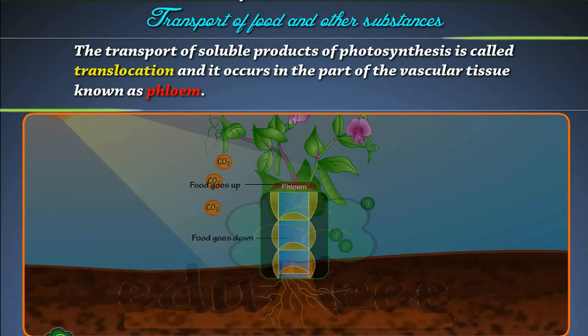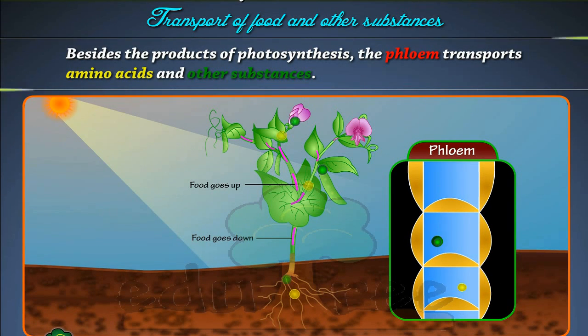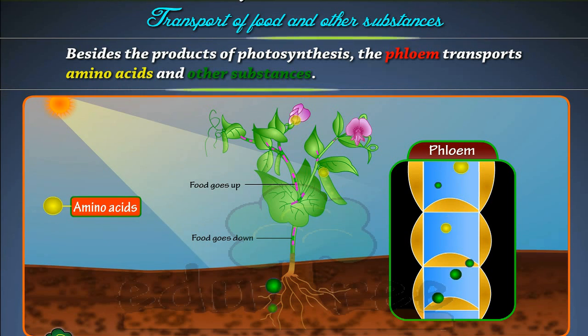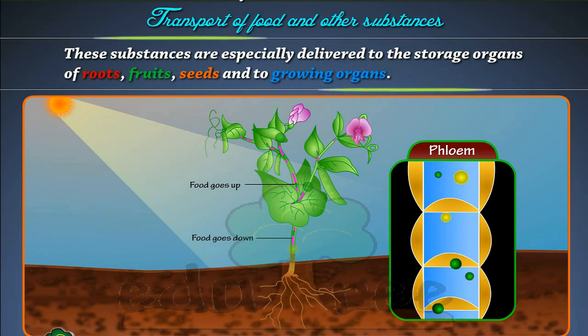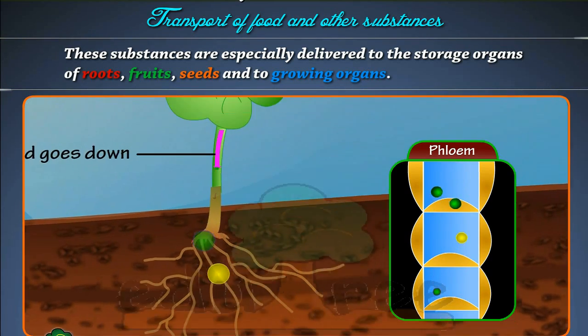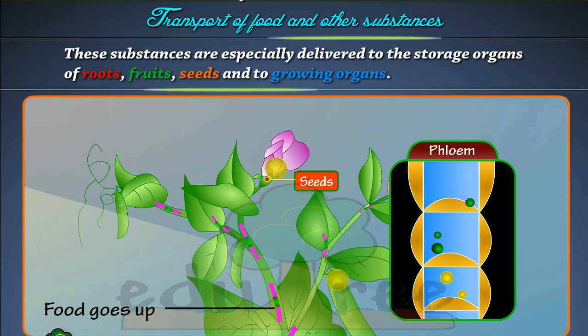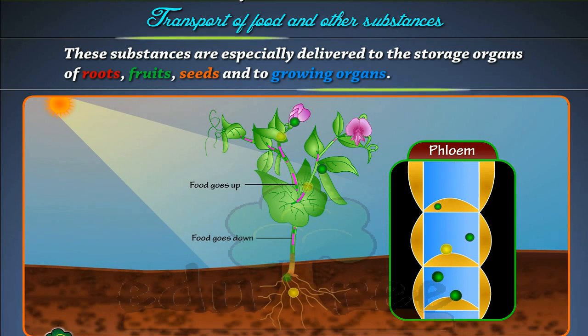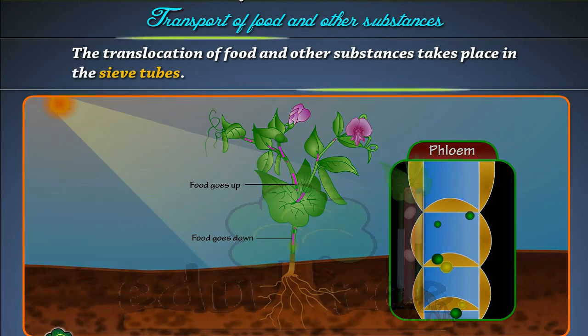tissue known as phloem. Besides the products of photosynthesis, the phloem transports amino acids and other substances. These substances are especially delivered to the storage organs of roots, fruits, seeds, and to growing organs.